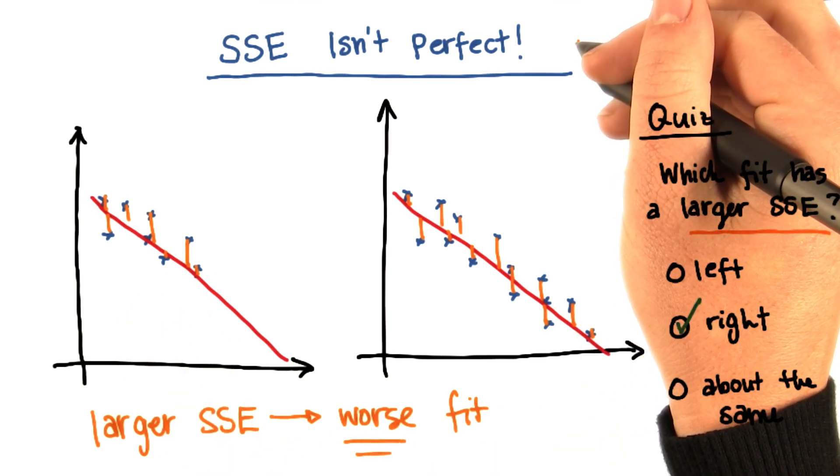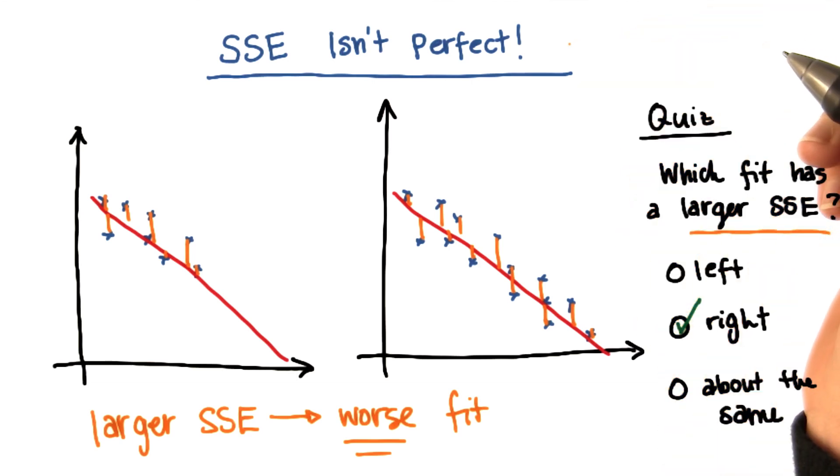And this is one of the shortcomings of the sum of squared error in general as an evaluation metric. As you add more data, the sum of the squared error will almost certainly go up, but it doesn't necessarily mean that your fit is doing a worse job.